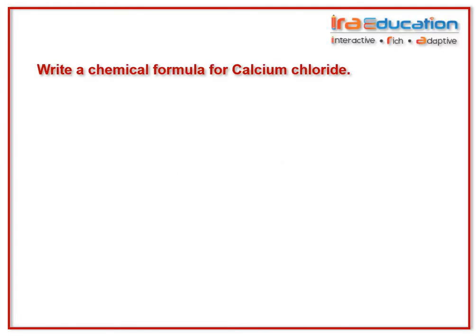Let us understand how to write a chemical formula for a given compound — calcium chloride — using the cross method. This method involves four steps. Step 1: write the symbol of the positive ion on the left side and the symbol of the negative ion on the right side.